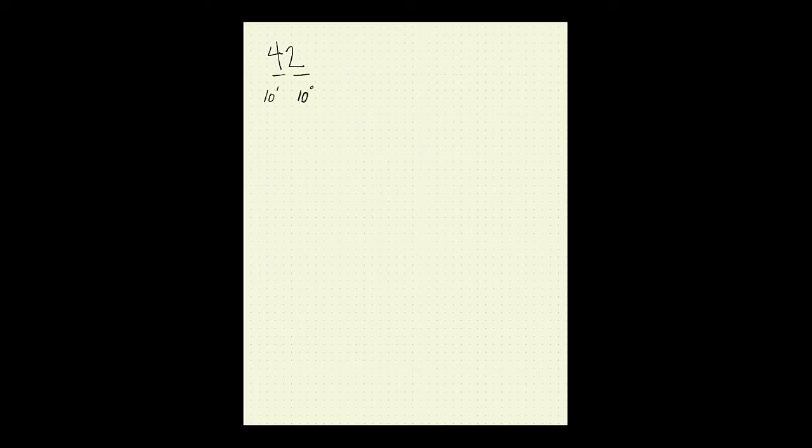When we think about a decimal number — which is a number in the way that we normally think of it — so for example, I'll use the number 42. What you may remember from middle school or even elementary school is that when we write a number like 42, we essentially have two places: the tens place, represented by 10 to the 1, and the ones place, represented by 10 to the 0. So 42 is really 4 times 10 to the 1, plus 2 times 10 to the 0, which gives us 40 plus 2, equaling 42.